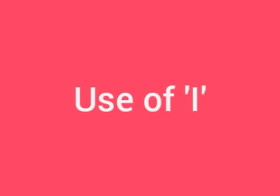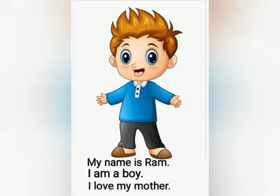Now let us see where we use 'I'. When we say something about ourselves, we use the pronoun 'I'. For example: 'My name is Ram. I am a boy. I love my mother.'